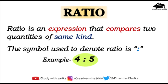Now, how do we actually denote ratio? There is a symbol used to represent ratio — a colon. For example, 4 colon 5 is a ratio where two numbers are compared by putting a colon between them, and the numbers are written in their simplest form. This is how ratio is written.